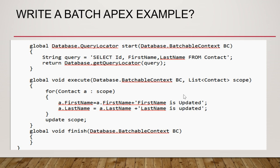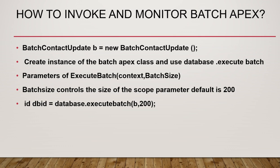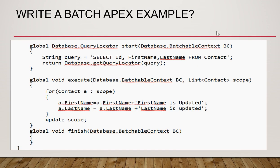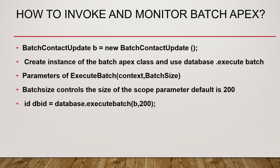To invoke a batch job, you write the class which implements Batchable, then instantiate that class — for example, BatchContactUpdate is my class name. Then use Database.executeBatch to run it, passing the instance as well as the batch size. The default batch size is 200; it can go less than this but not more.